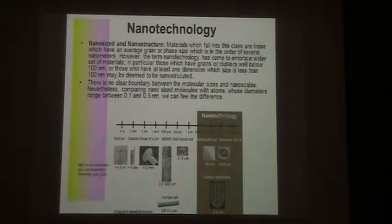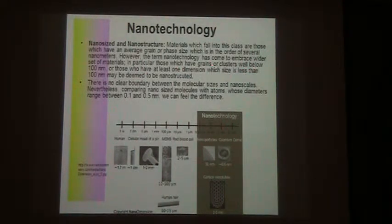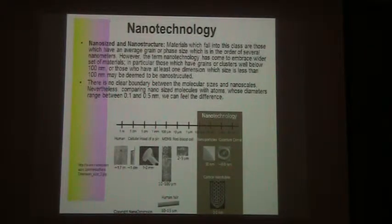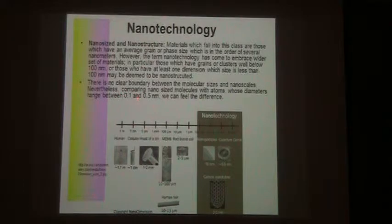The term nanotechnology has come to embrace a wider set of materials — those with grains or clusters well below 100 nanometers, or those with at least one dimension less than 100 nanometers, may be deemed nanostructures. There is a clear boundary between molecular sizes and nanoscale. Atoms have diameters between 0.01 to 0.5 nanometers.